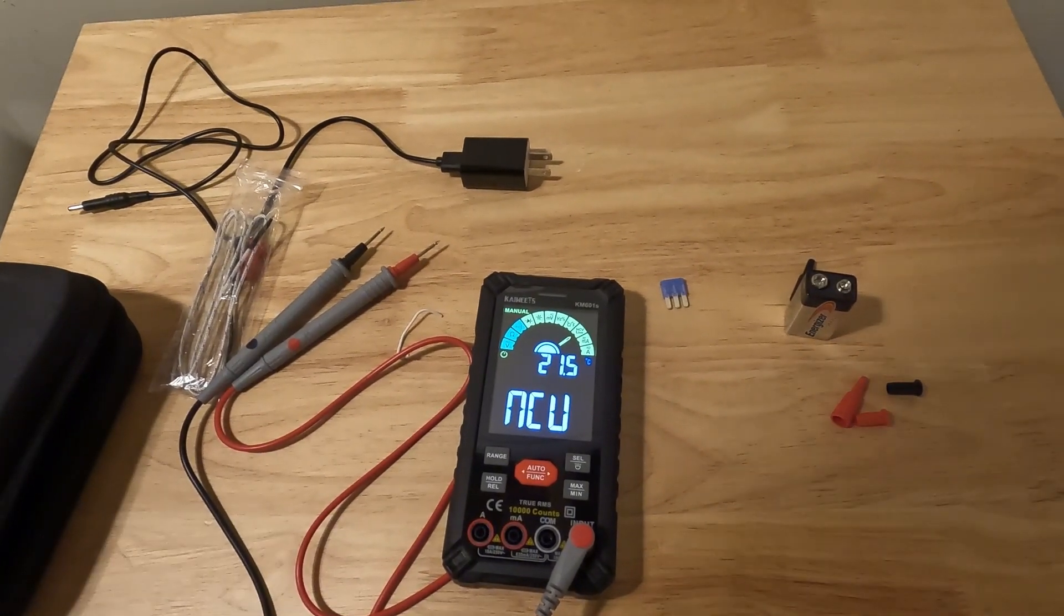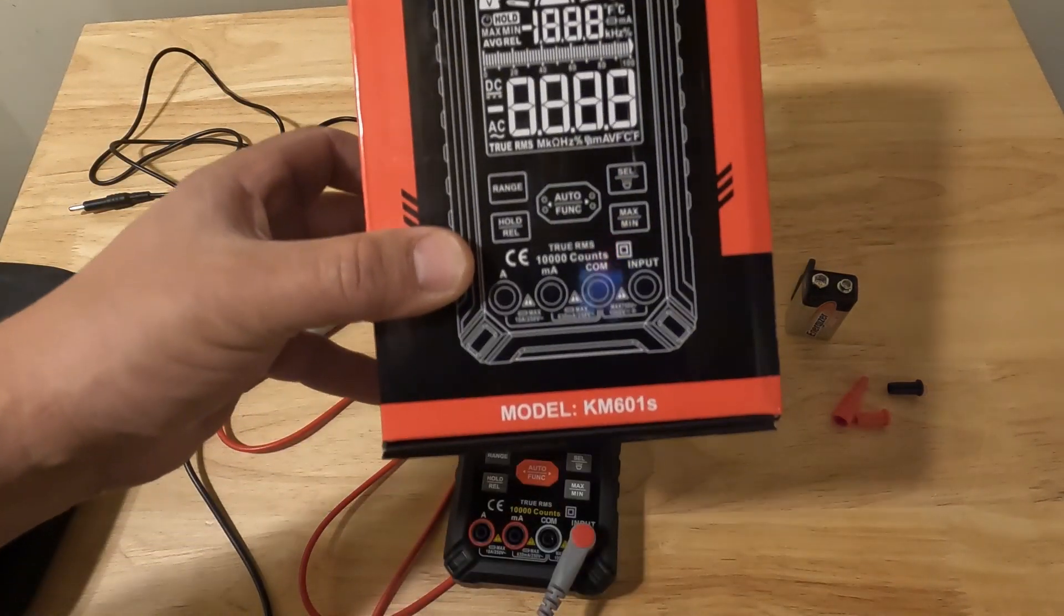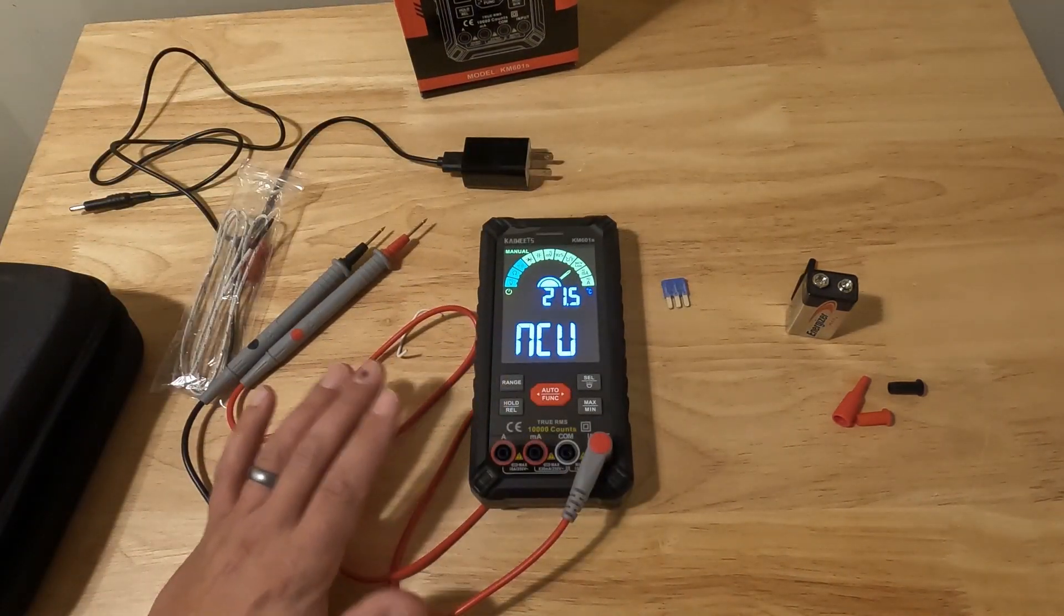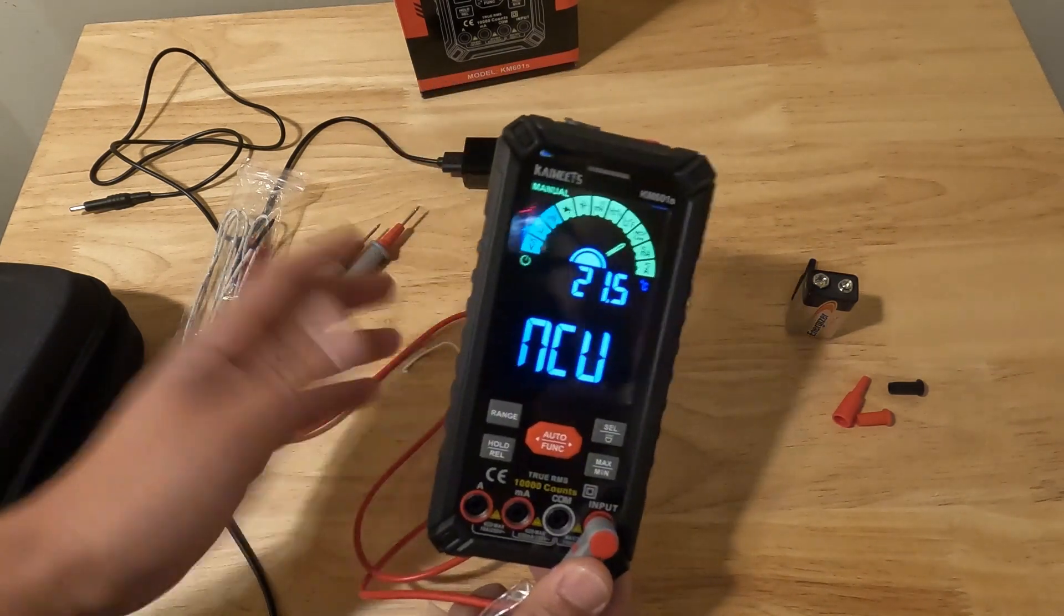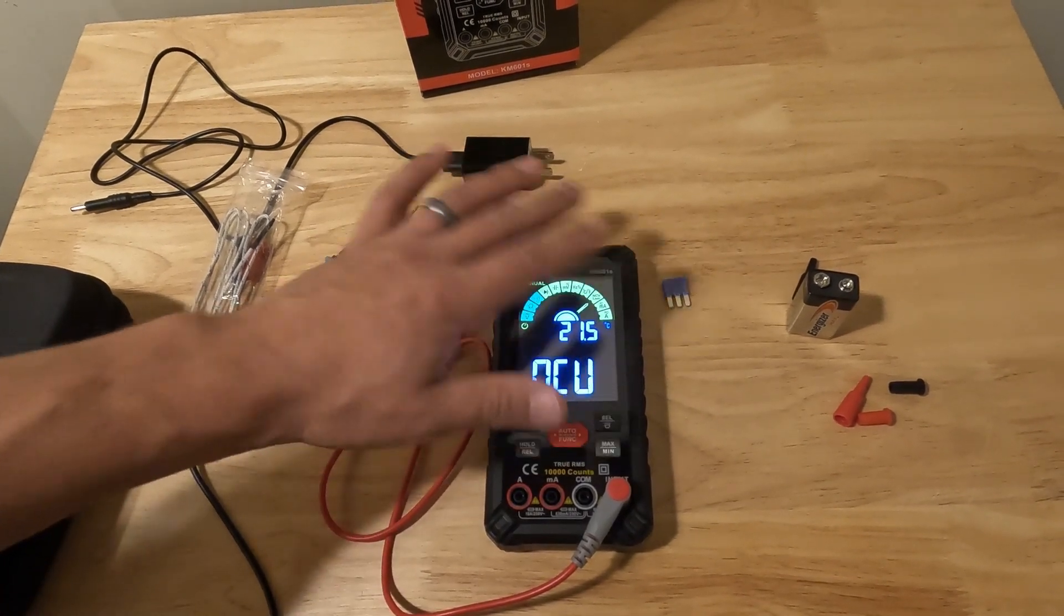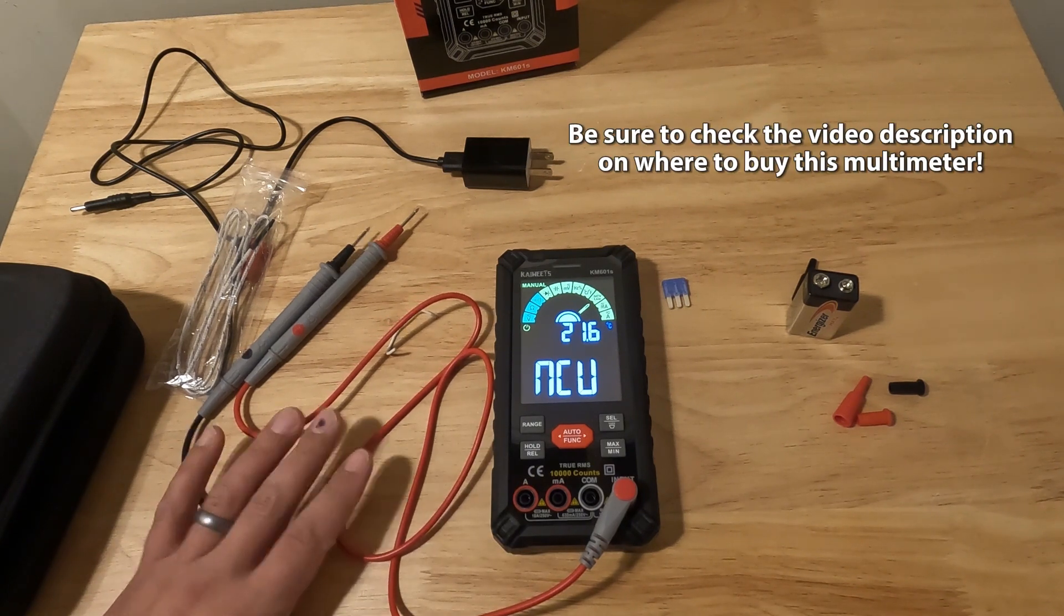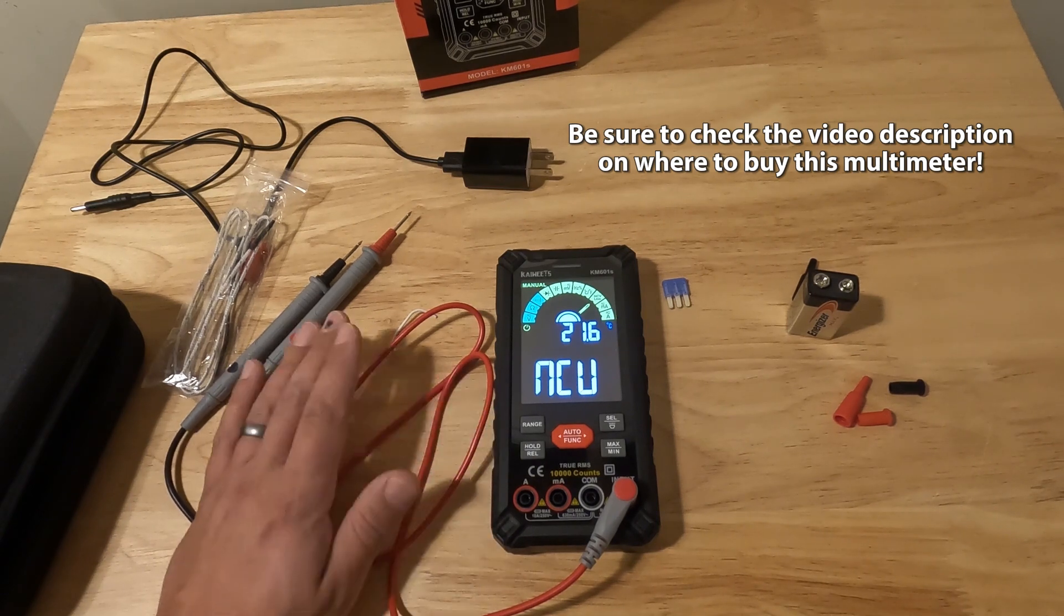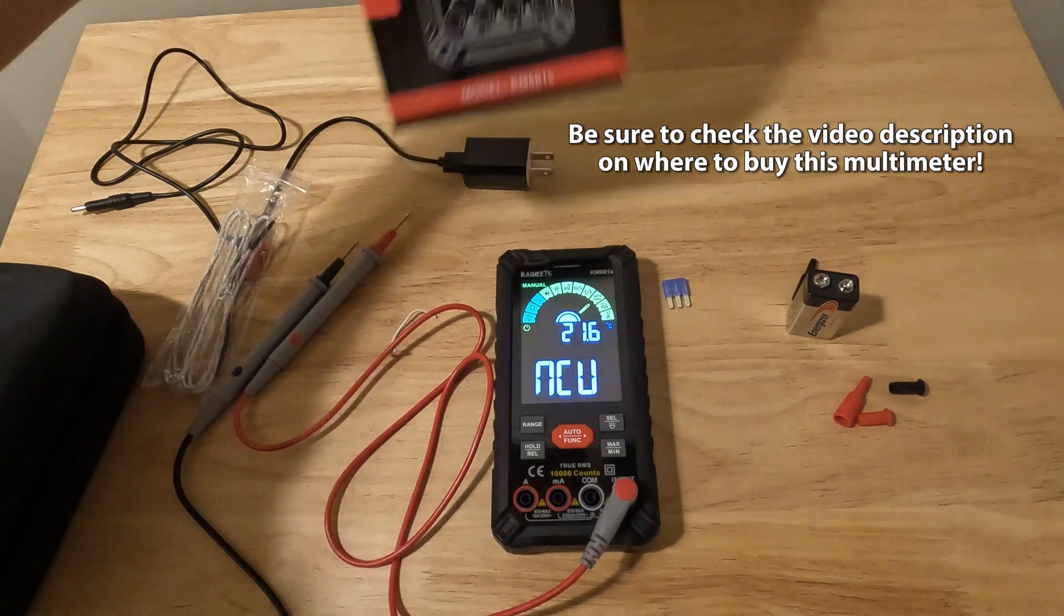That pretty much sums up this multimeter, the Kaiweets model KM601S. If you guys have any questions on this be sure to leave them in the comments. Like I said, I'm going to make individual videos on all these different settings. It would just be way too long of a video for right now so I'm going to make each individual video for every setting and really break it down for everyone. If you have any questions be sure to leave them in the comments, otherwise be sure to like this video and subscribe to the channel. It helps me grow, it helps me create more content. Thanks for watching, I'll see you next time.